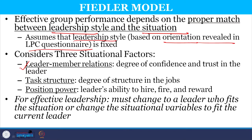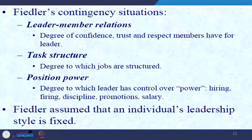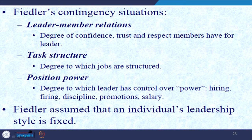For effective leadership, there must be a situation where the leadership style matches with the situation. If not, leadership must change to a leader who fits the situation, or change the situational variables to fit the current leadership style. Fiedler's contingency situations are leader-member relationship — the interpersonal relationship between leader and subordinate, how much confidence the leader has with the subordinate, the degree of trust and respect which members have towards their leader — which to a large extent decides the effectiveness of leadership.